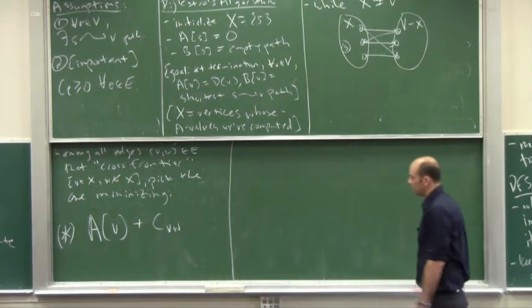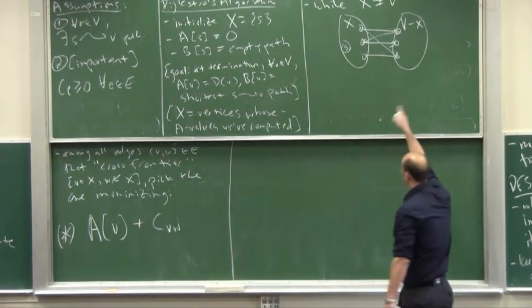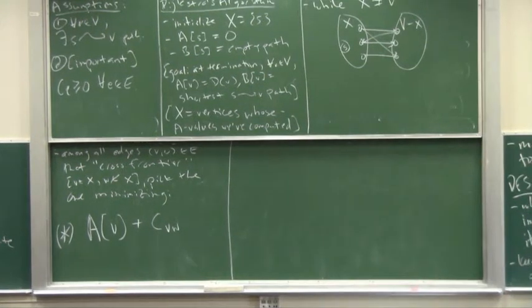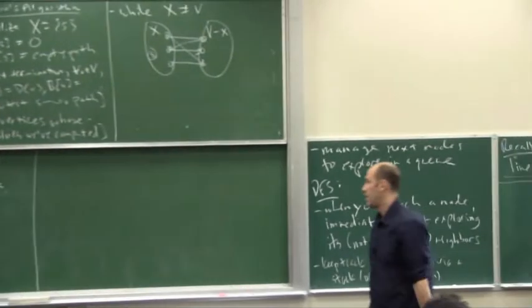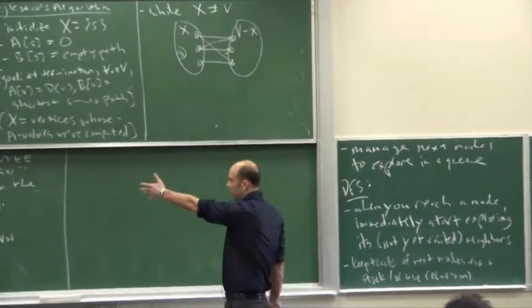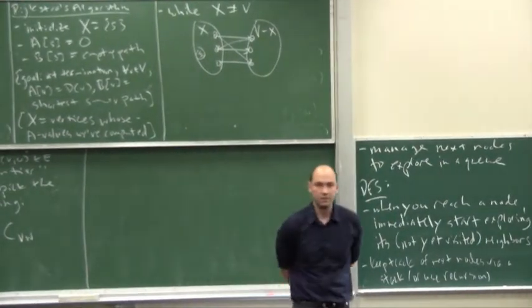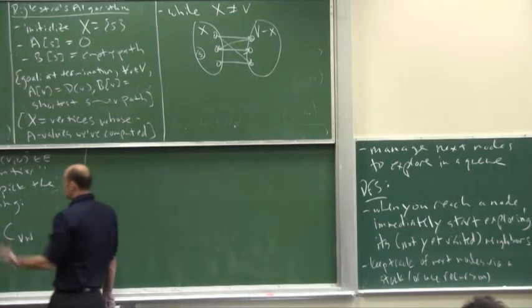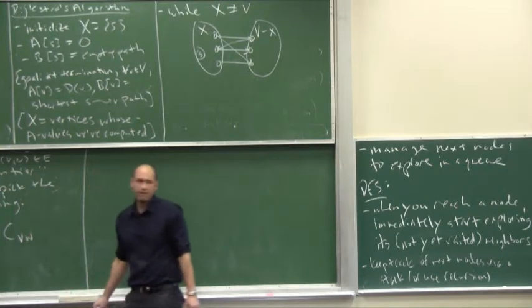So remember what this notation is. What have we done? We found an edge which is crossing the frontier. The left endpoint, the tail of the edge V, is in capital X, and that means we've already computed an A value for it. We already think we know what its shortest path distance is, so it's well-defined to write A of V. And then this is VW with some edge, so it has some cost and we just add that in.